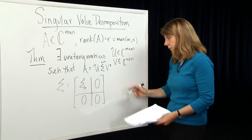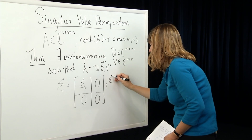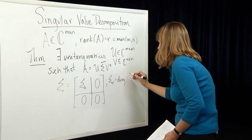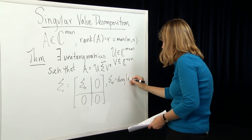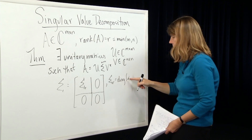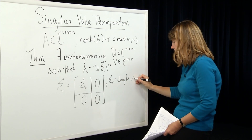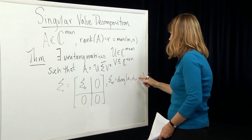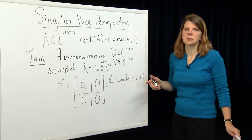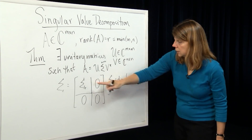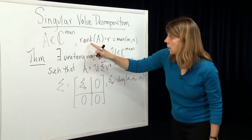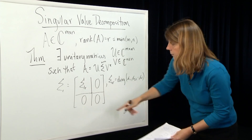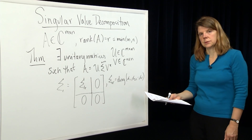Sigma_r is a diagonal matrix whose diagonal entries are the non-zero singular values of A: σ₁ up to σ_r. Remember, r is the rank of the matrix A, and the rest of the matrix Sigma is equal to zero.